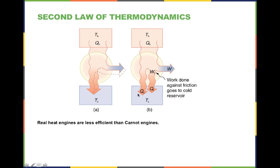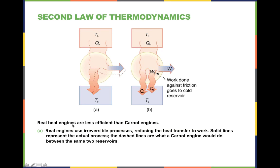Real heat engines are less efficient than Carnot engines — the greatest that's ever been seen is about 70% of what would be calculated from a Carnot engine. Real engines use irreversible processes, unlike the Carnot engine which only uses reversible processes, and this reduces the heat transfer that can be converted into work. The solid line represents the actual process; the dashed line is what a Carnot engine could do with the same two reservoirs.